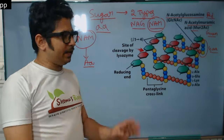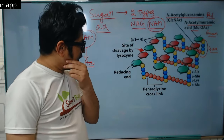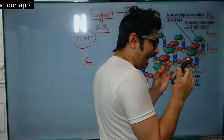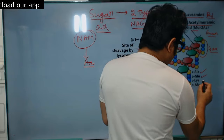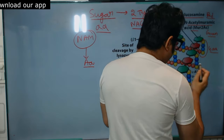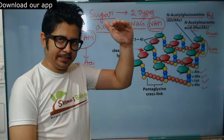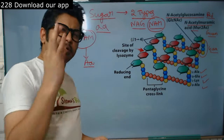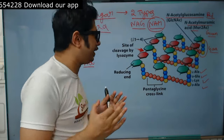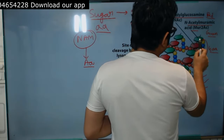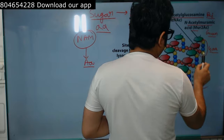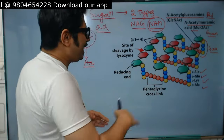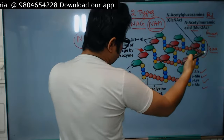This is N-acetyl muramic acid connected with four amino acids as per this picture — four to five amino acids are present. The four amino acids linked here are L-alanine, D-glutamic acid, L-lysine, and D-alanine, starting with L-alanine and ending with D-alanine, with D-glutamic acid and L-lysine in between. NAM is attached to four such amino acids, which are known as a tetrapeptide, and these tetrapeptides form a continuous structure.